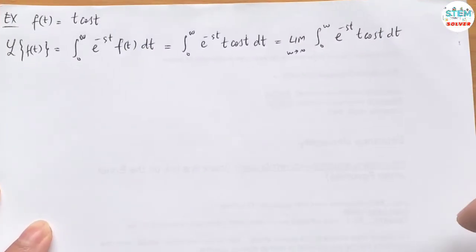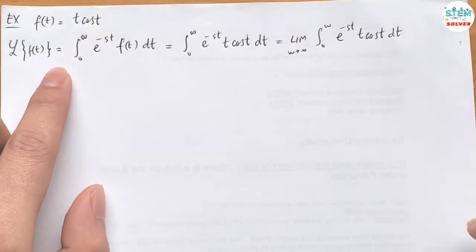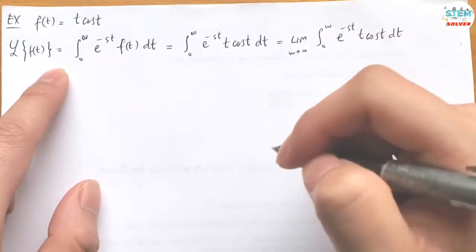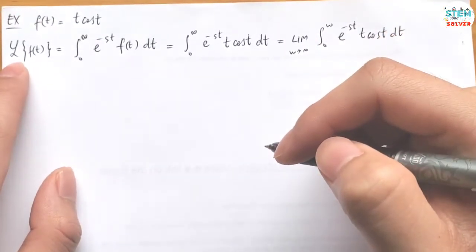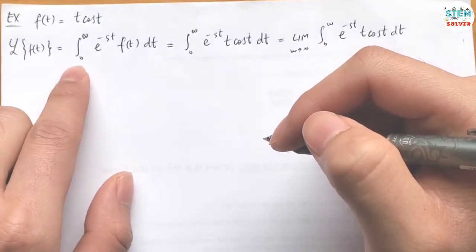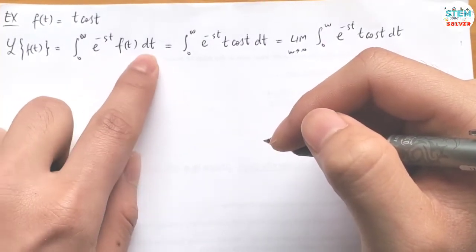Find the Laplace transform of t·cos(t) using the definition of the Laplace transform. By the definition, the Laplace transform of f(t) is equal to the integral from 0 to infinity of e^(-st) f(t) dt.